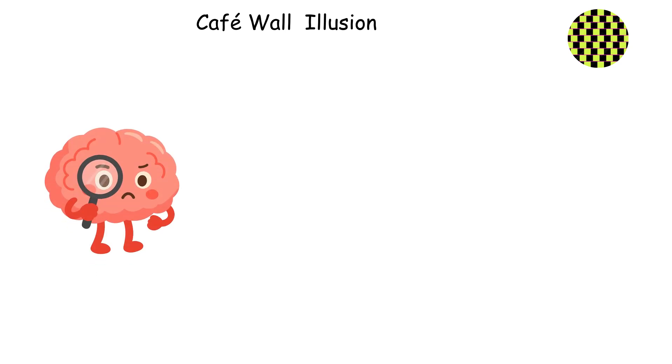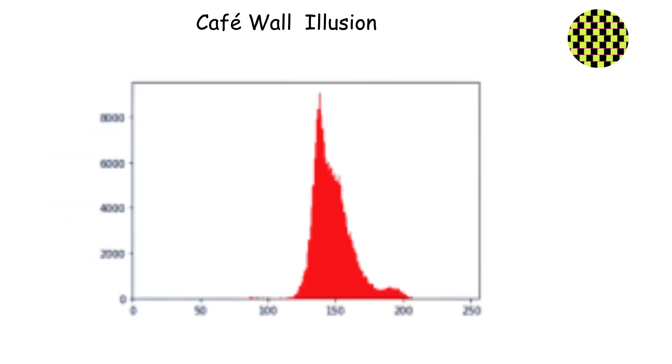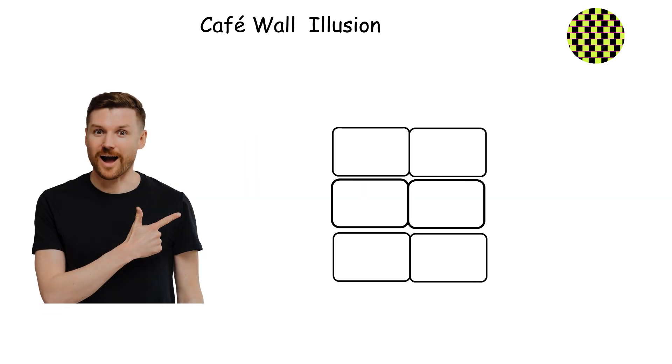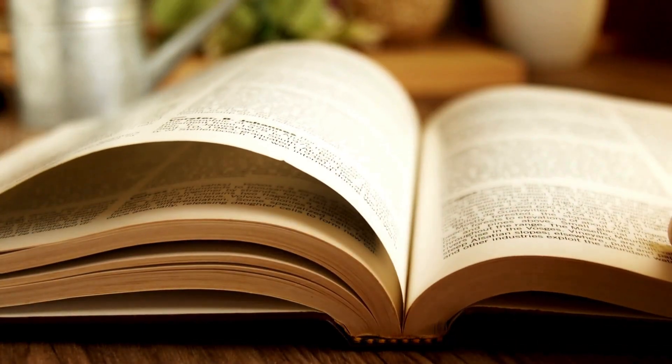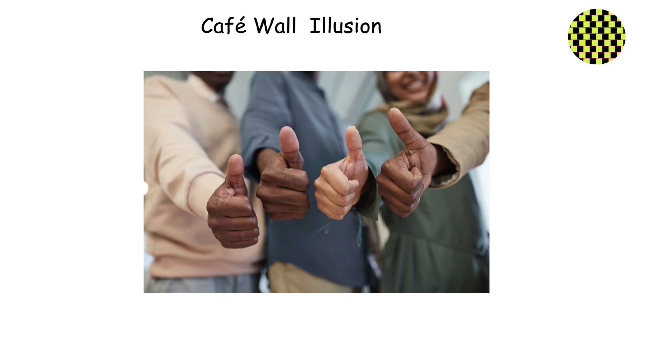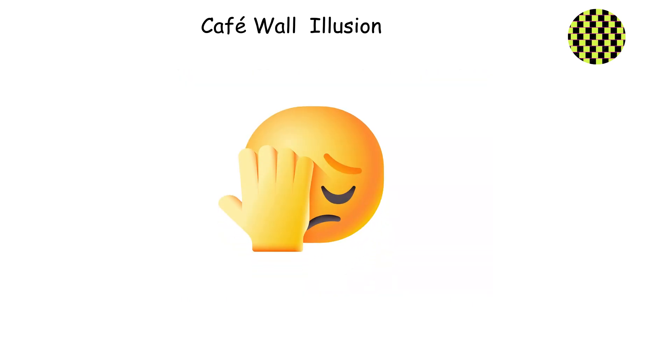The reason your brain gets bamboozled is because of how it processes contrast in edges. The gray mortar lines sit between alternating light and dark tiles, and your brain's edge detection system goes haywire trying to figure out where one tile ends and another begins. It's like your brain is trying to read a book where every other word is in a different font. It can do it, but it makes mistakes along the way.